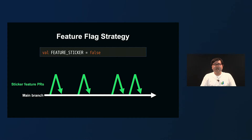You would be using a boolean flag that would enable or disable features to prevent these features from being executed. Then, when you're ready to release a feature, you simply need to rewrite this flag to True to enable the feature. In this way, you can use Feature Flag to enable or disable a feature so that unfinished features would be hidden and those that are ready would be shown.